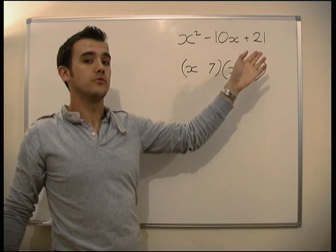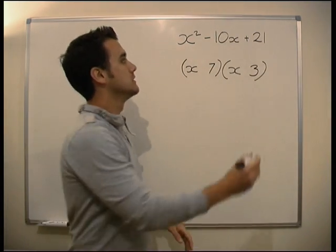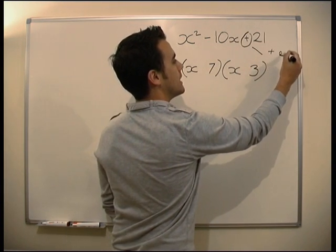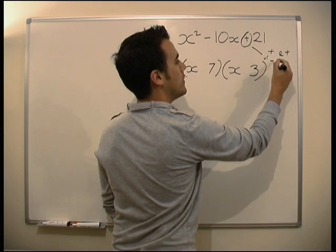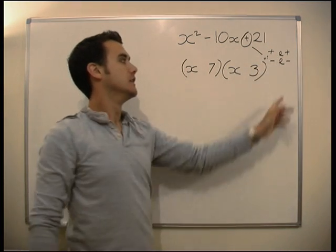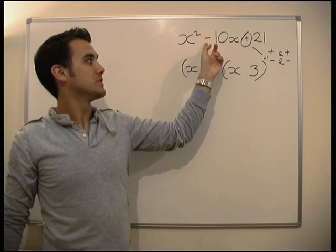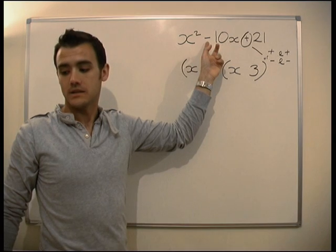Now this is a plus, so it's going to be either two positives or two negatives. The plus here tells us we must have a plus and a plus, or a minus and a minus. The way we know, we look at the sign here. If this is positive we must have two pluses. If this is negative we must have two negatives. So it's a negative, so we must therefore have two negatives.